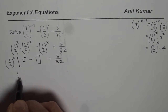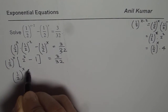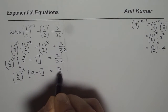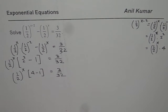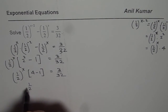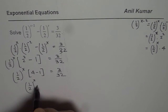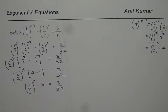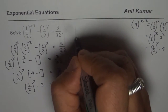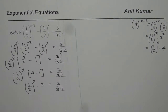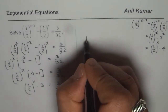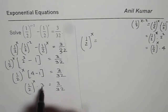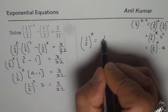Now I get half to the power of x times 4 minus 1, which equals 3 over 32. Since 4 minus 1 is 3, this gives half to the power of x times 3 equals 3 over 32. We can solve by dividing both sides by 3, so we get half to the power of x equals 1 over 32.